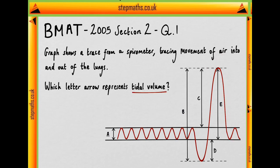We're asked to find out which of these lettered arrows A through E dotted across the diagram represents the tidal volume. Now this is a question where you either are familiar with the term enough to answer the question or you're not in which case you won't be able to identify it.